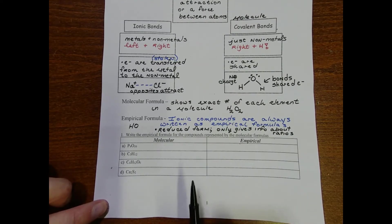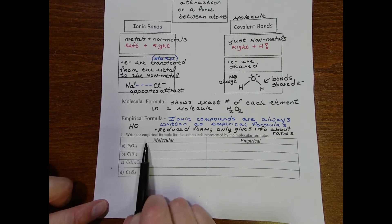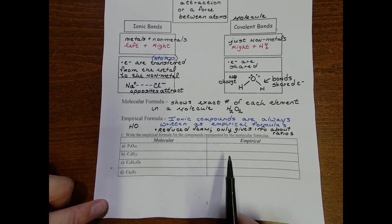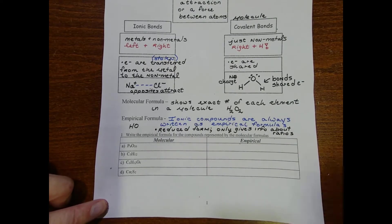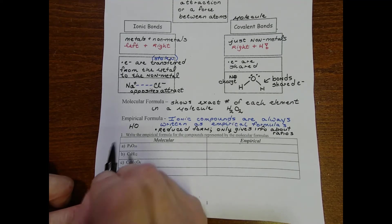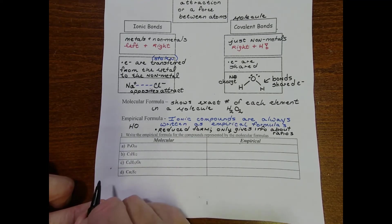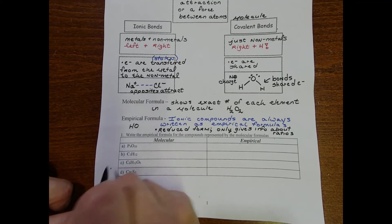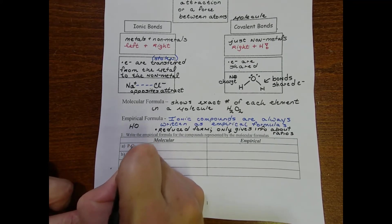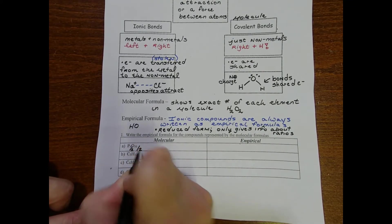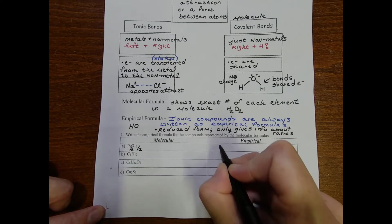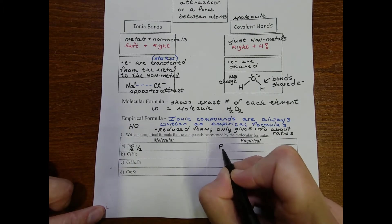Let's practice identifying the difference. If you have P4O10 that's molecular, and if you wanted to turn it into its empirical formula you're going to divide. Find a common divisor, so maybe 2 - I can divide that by 2 and that by 2, so we can reduce it down to P2O5.